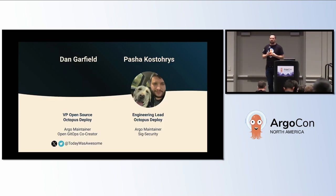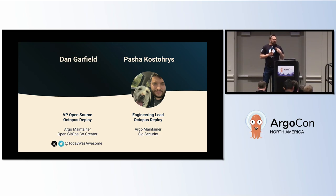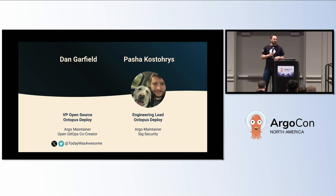Let me introduce myself. My name is Dan Garfield. I'm a co-founder of Codefresh and now VP of open source at Octopus Deploy. I am an Argo maintainer and have been for several years. I helped create the open GitOps standard and helped launch ArgoCon. This is actually kind of cool for me because I actually live in Salt Lake.